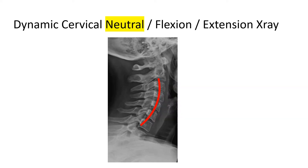If we look at a plain neutral x-ray, what we typically expect is that the normal architecture should be a c-shaped curve in the cervical spine, denoted by this red line here, and all of the vertebrae are stacked nicely on top of each other in good alignment — because the spine is very stable.